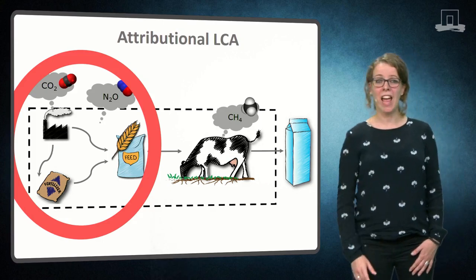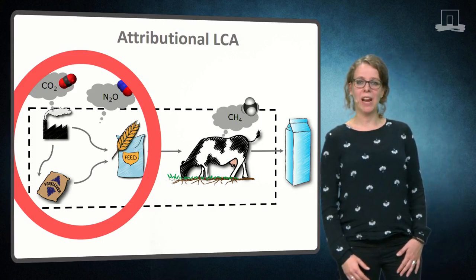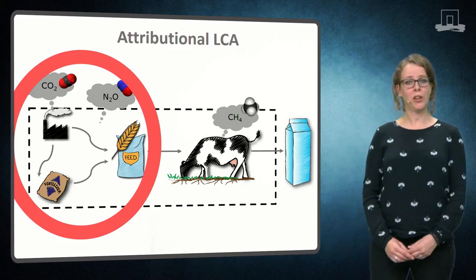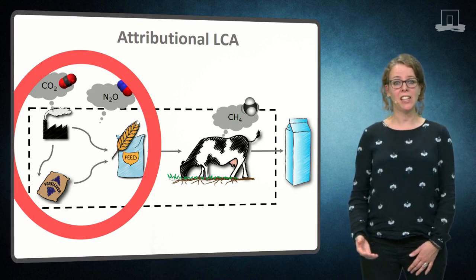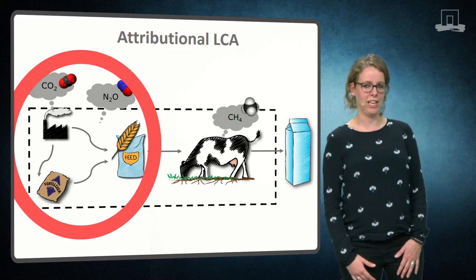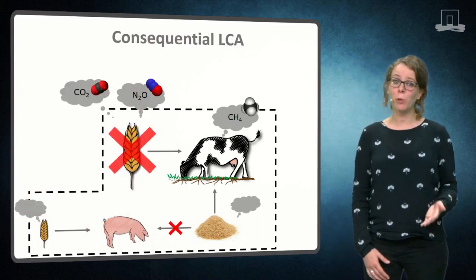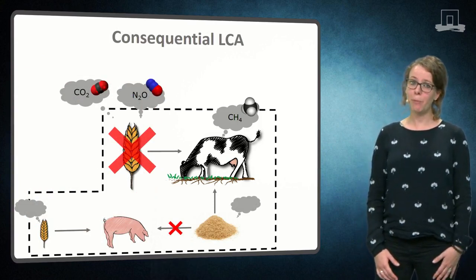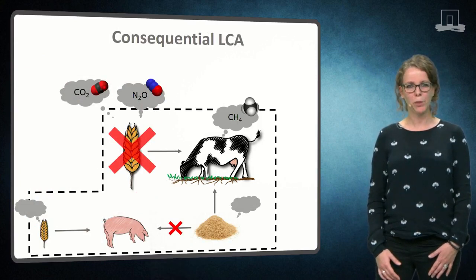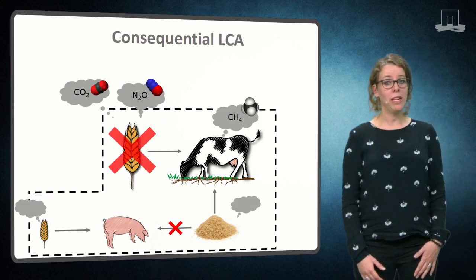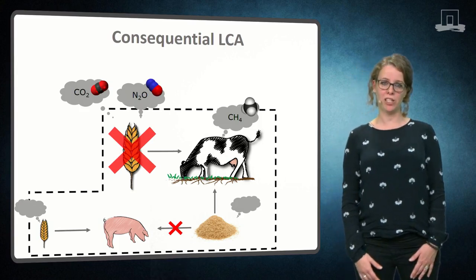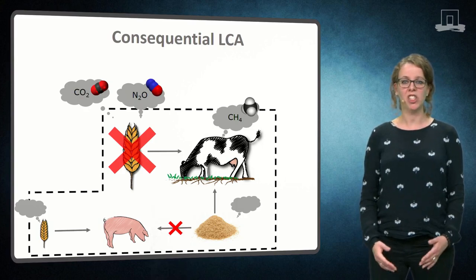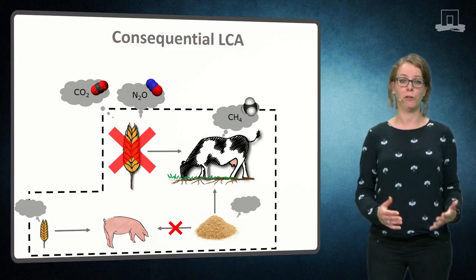Your neighbour farmer happens to produce wheat grain, and this grain is milled in a local factory. The meal is currently used to make bread, whereas the wheat middlings are fed to pigs in the neighbouring village. So if you want to feed wheat middlings to your cows, you have to realise that the pig farmer also has to change his feeding strategy. To know if feeding the wheat middlings to your cows really reduces greenhouse gas emissions, you need to include the emissions of all the processes that change as a consequence of your decision.